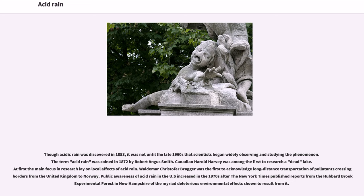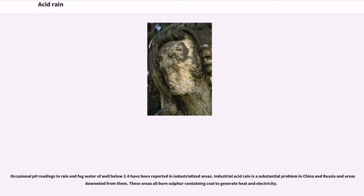Canadian Harold Harvey was among the first to research a dead lake. At first the main focus in research lay on local effects of acid rain. Valdemar Christopher Brugger was the first to acknowledge long-distance transportation of pollutants crossing borders from the United Kingdom to Norway. Public awareness of acid rain in the U.S. increased in the 1970s after the New York Times published reports from the Hubbard Brook Experimental Forest in New Hampshire of the myriad deleterious environmental effects. Occasional pH readings in rain and fog water of well below 2.4 have been reported in industrialized areas. Industrial acid rain is a substantial problem in China and Russia, and in areas downwind from them — these areas all burn sulfur-containing coal to generate heat and electricity.